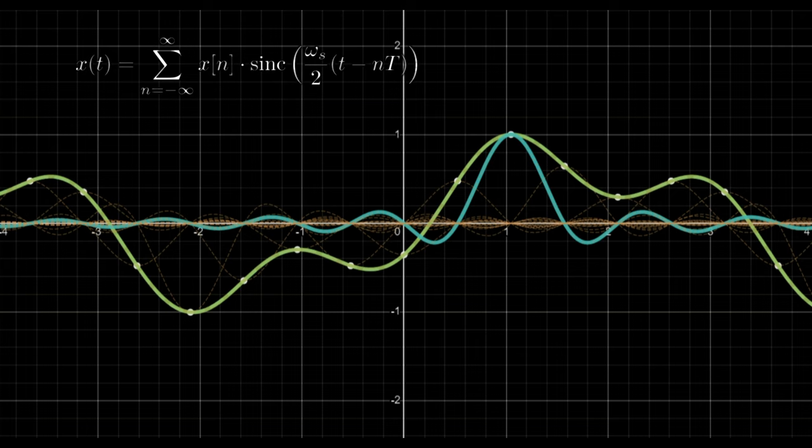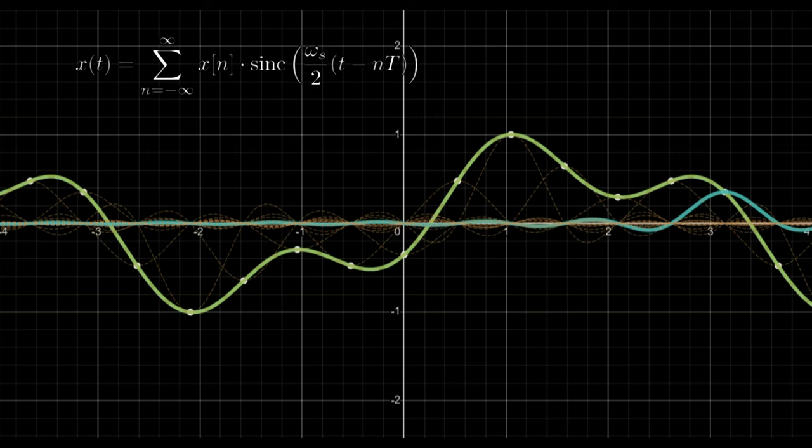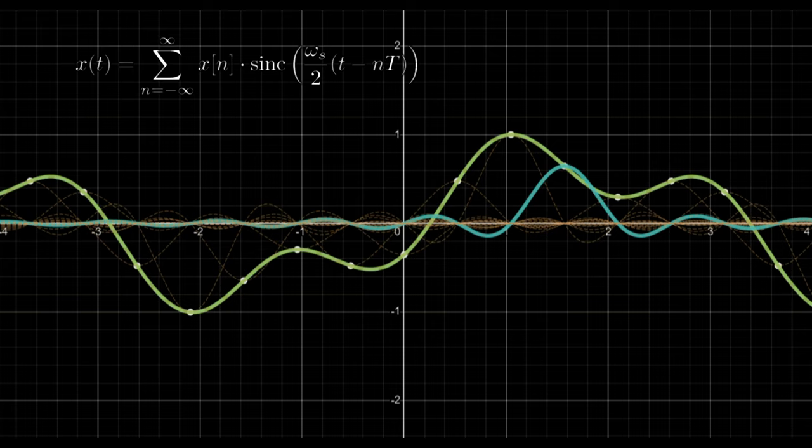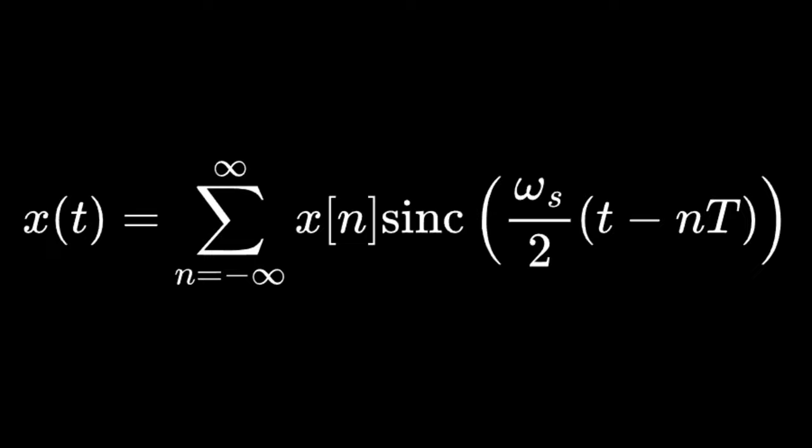In practice, you can approximate this reconstruction in a way you wouldn't depend on the future at all. I've left an interactive tool for you to compare different approximations and to test Nyquist's condition, which leads me to my final question for you. This formula works only for signals that satisfy Nyquist's condition, so what happens if we use it on a signal that doesn't?